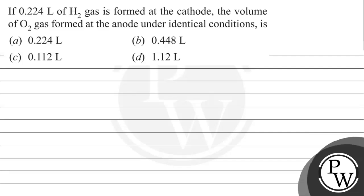Hello Bacho, let's start this question. The question says if 0.024 liters of H2 gas is formed at the cathode, what is the volume of O2 gas formed at the anode under identical conditions?